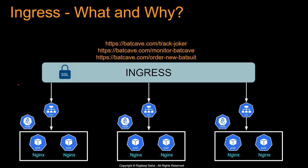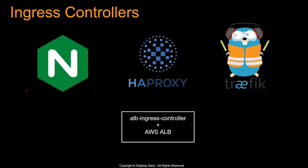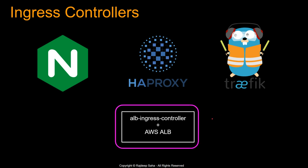There are multiple ingress controllers available in the market. The notable ones are Nginx, HAProxy, Traefik, and the ALB ingress controller, which works with AWS ALB — the Application Load Balancer. Since we are running Kubernetes on EKS, I'm going to use the ALB ingress controller, but the concepts are the same for all ingress controllers.